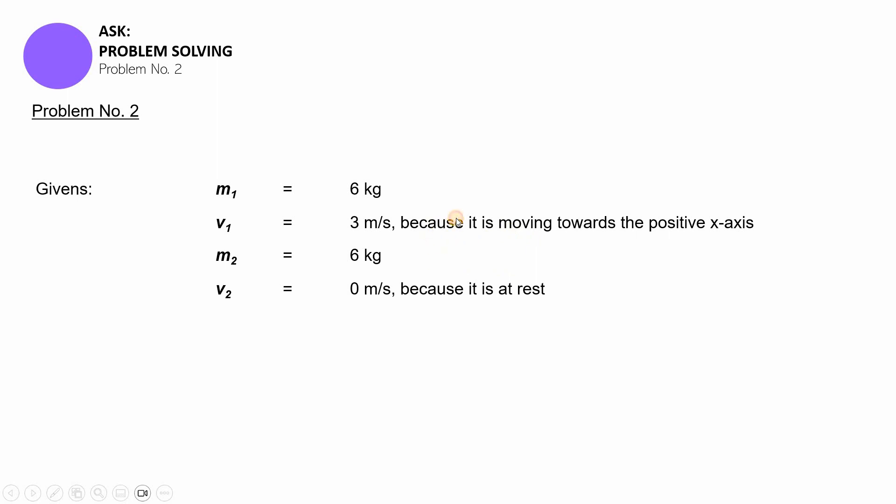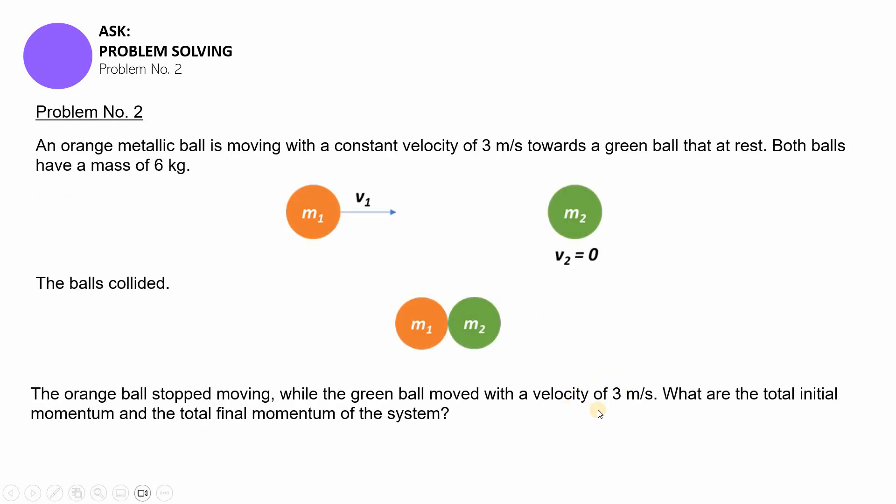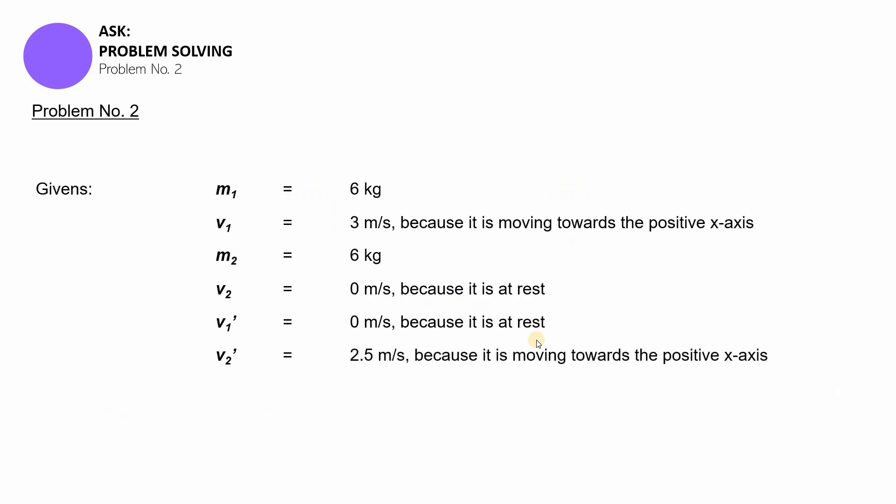All right. Now, after the collision, nag-stop yung V1. So, obviously, V1 prime will be equal to 0 meters per second. And then, V2 naman ang nag-boo. So, it's going to be 3 meters per second. Actually, mali yung nailagay natin dyan. So, let's just retract our steps. Ayan. So, that one, V2 prime is actually 3 meters per second.